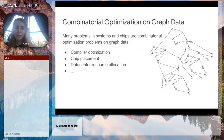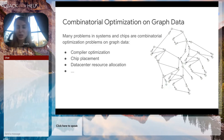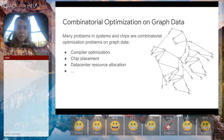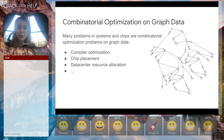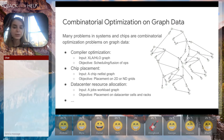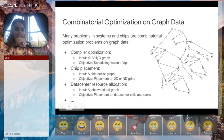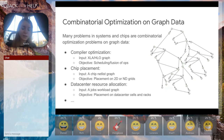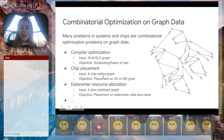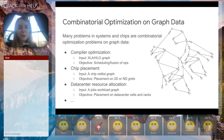Many problems in systems and chips have this combinatorial optimization format on graph-structured data. If you think about it, compiler optimization, chip placement, data center resource allocation — all of them have some input in the form of a graph, such as in the compiler case, an XLA HLO graph. The optimization objective is some sort of decision making on the ops of this graph, such as scheduling of the ops, or for a chip input graph, it could be placement.